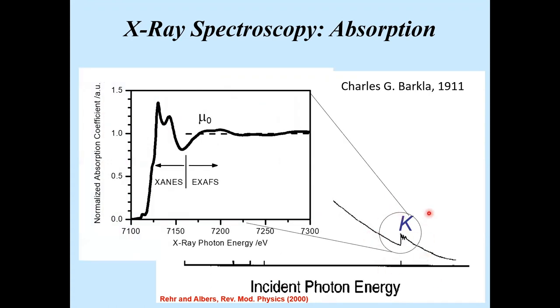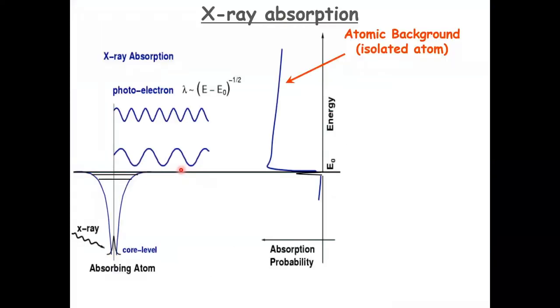If you zoom into one of these edges, you see below the edge some features, modulations on the edge and above the edge. These modulations are called XANES and EXAFS modulations, and I'll explain how they come about.